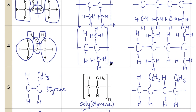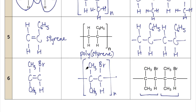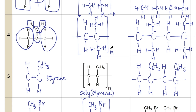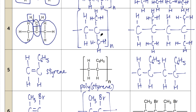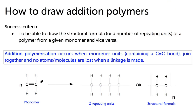Another thing to note: why do some questions show all bonds drawn out, while others show condensed groups written as letters? Depending on the question, you may be asked to draw the full displayed formula where every single bond is shown, or just the structural formula where you can write groups in condensed format to save time. That's all for today — you should now be able to draw the structural formula for a polymer from a given monomer and vice versa. Thanks for watching.